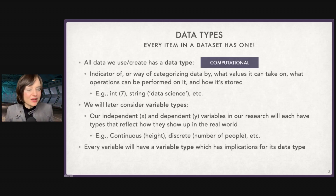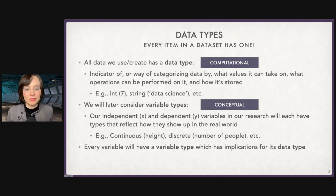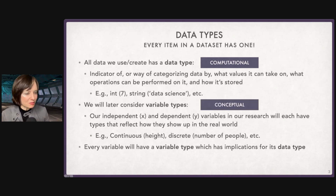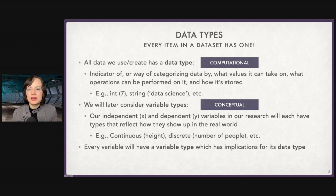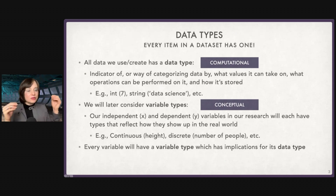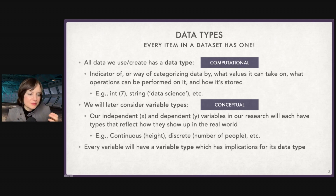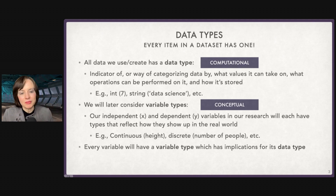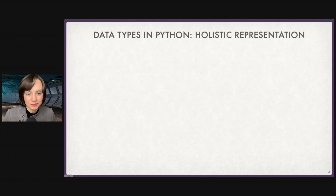Data type is computational — it's how it's stored in the computer. Variable type is more conceptual — it's about how we're capturing the thing that we care about. Is this thing fundamentally a continuous variable or a discrete variable? It gets very philosophical. Both are really important.